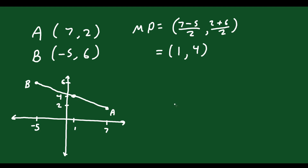Now how do I find the equation of the line going through that midpoint at 90 degrees? That's your perpendicular bisector. To come up with the equation of a line, you need the slope and a point to use in y = mx + b. We already have a point — the midpoint (1, 4) is on this new line — but we still need the slope.